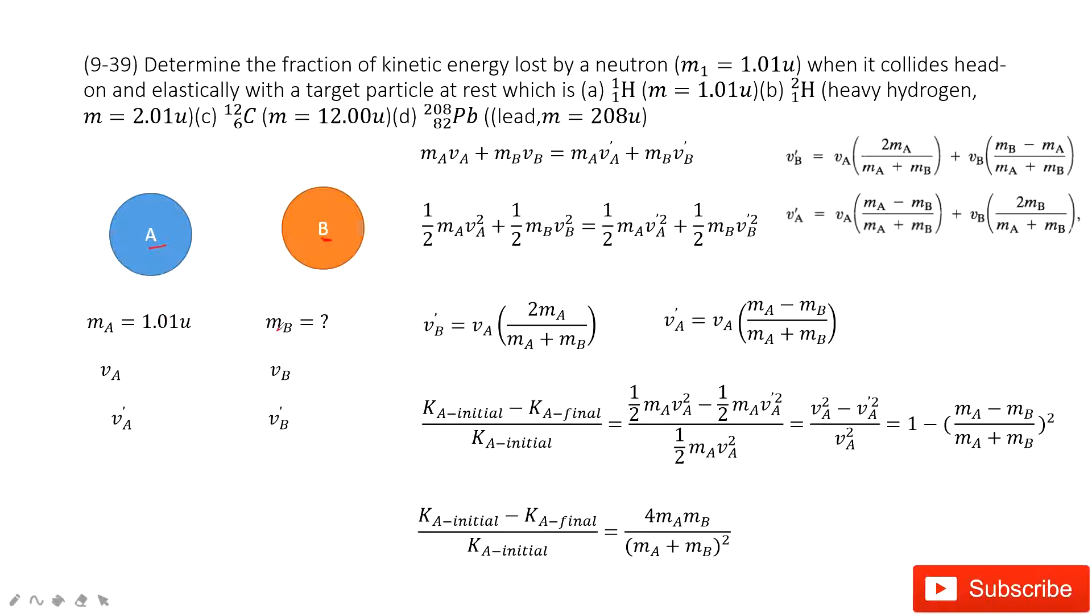And mass A is given. Mass B is unknown, right? It is not desired. And VA is unknown. VB is zero because the target particle is stationary.